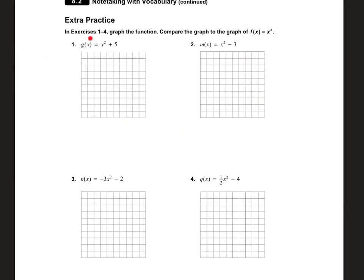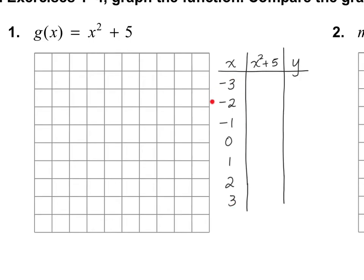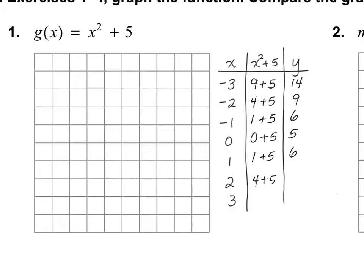On the next page, we need to graph the function and compare it to the graph of the parent function, which is x squared. Let's take a look at number one. I'm going to plug in negative three, negative two, negative one, zero, one, two, and three. Plugging in negative three: negative three squared is nine, plus five is 14. Negative two gives four plus five, which is nine. Negative one gives one plus five, which is six. Zero plus five is five. And you'll notice the values repeat: four plus five is nine, and nine plus five is 14.